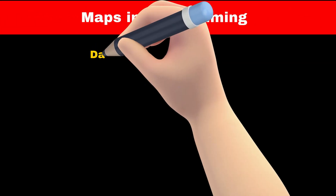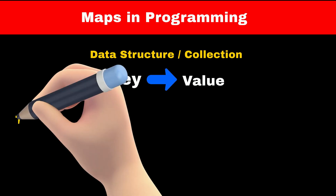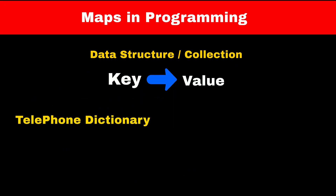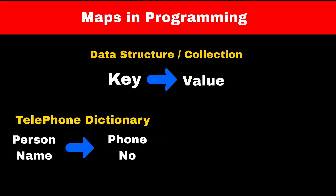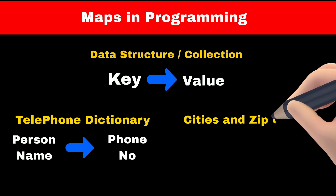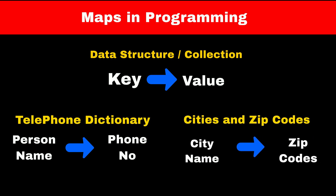Map is a data structure where we store various values in the form of key-value pairs. There are many real-world applications of maps, such as a telephone directory where the key is the name of the user and the value is their phone number. Another example is cities and their zip codes, where the key is the city name and the value is the zip code.